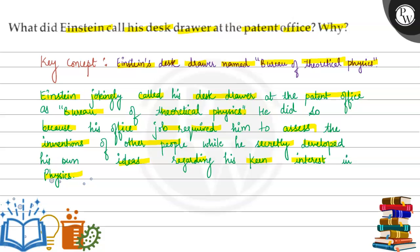Our final answer to this question is Einstein mazakh mazakh mein apne desk drawer ko Bureau of Theoretical Physics bolta tha, kyunki unka office mein jo kaam hota tha, wo hota tha ki doosron ko assess karna, patents ka, inventions ka, aur jabki wo khud ki bhi theories create kar rahe the physics mein. I hope you understood it well.